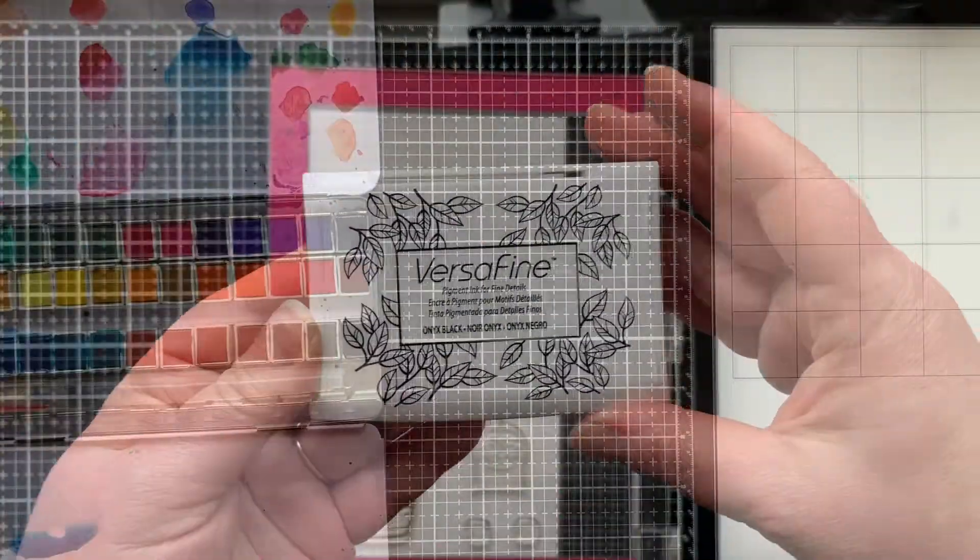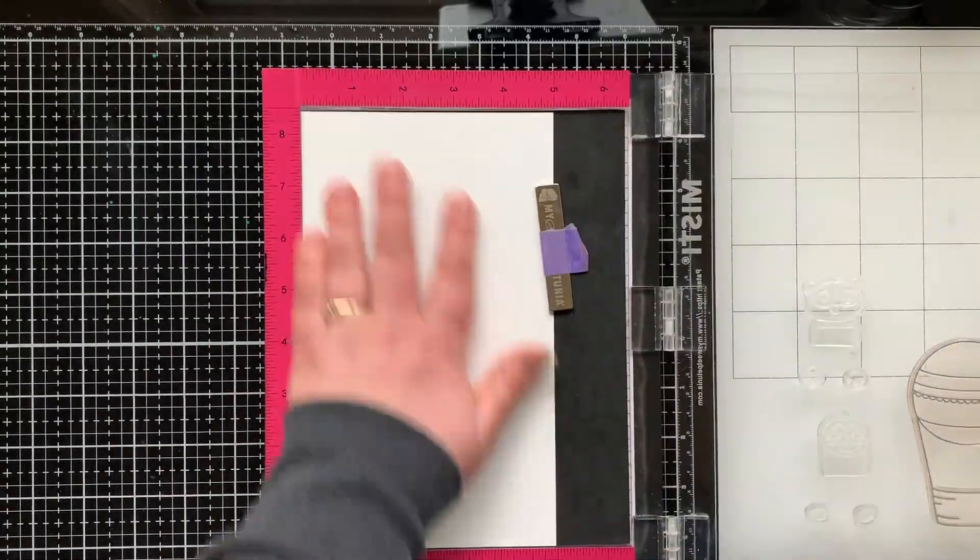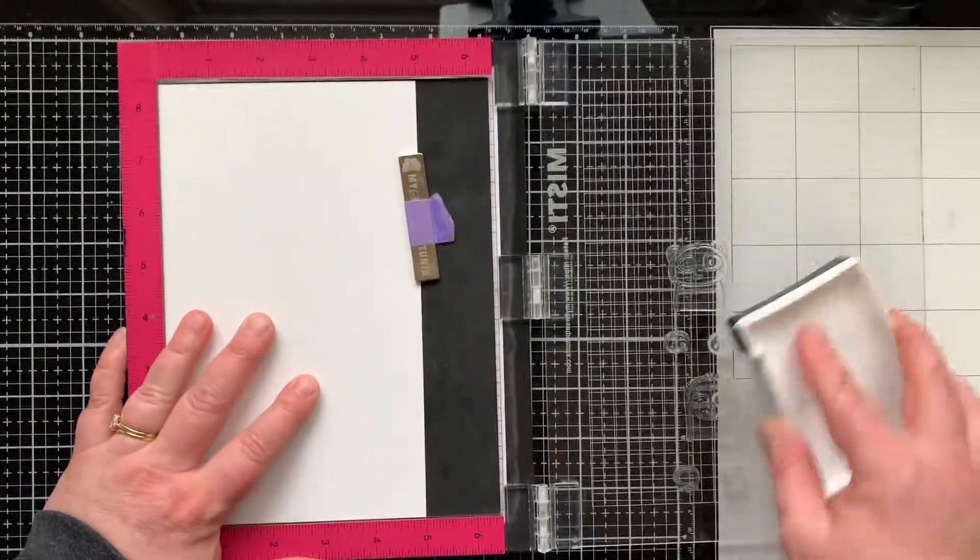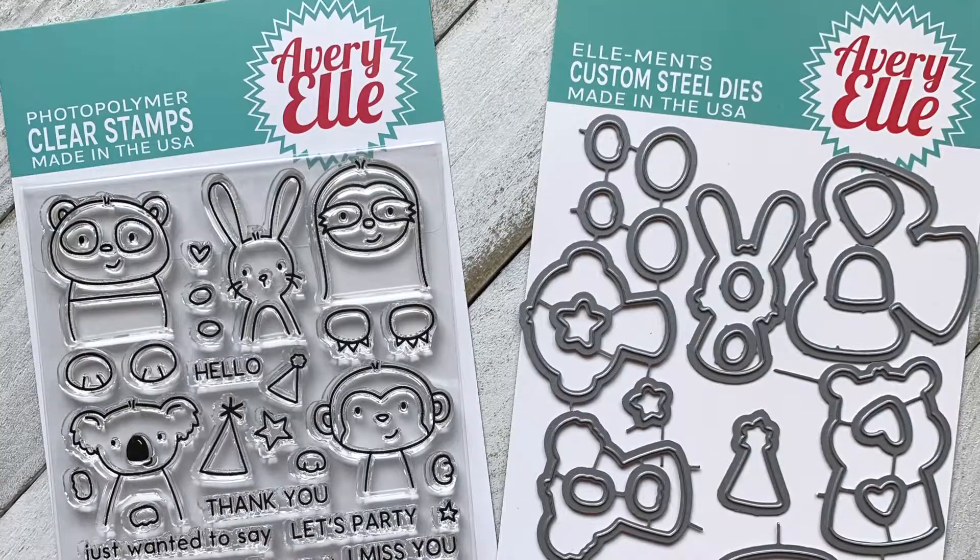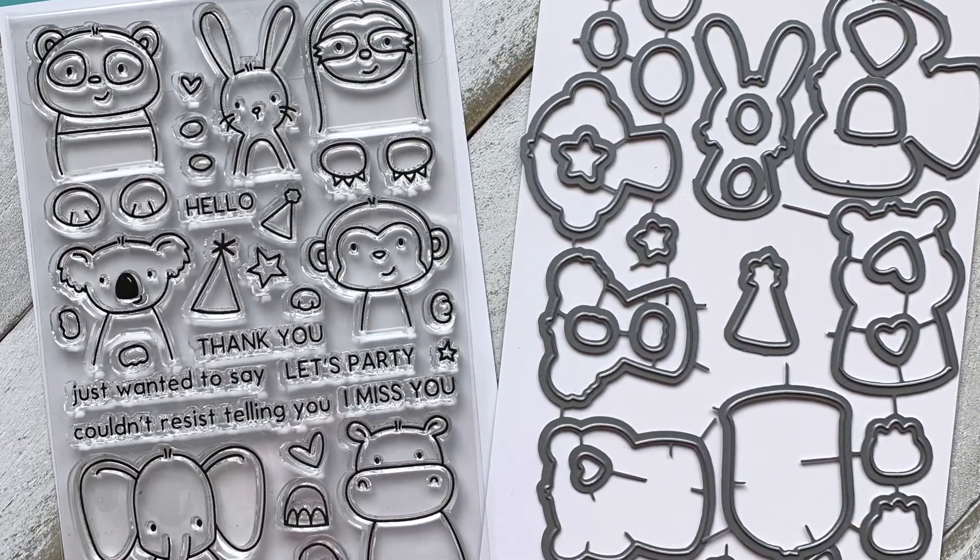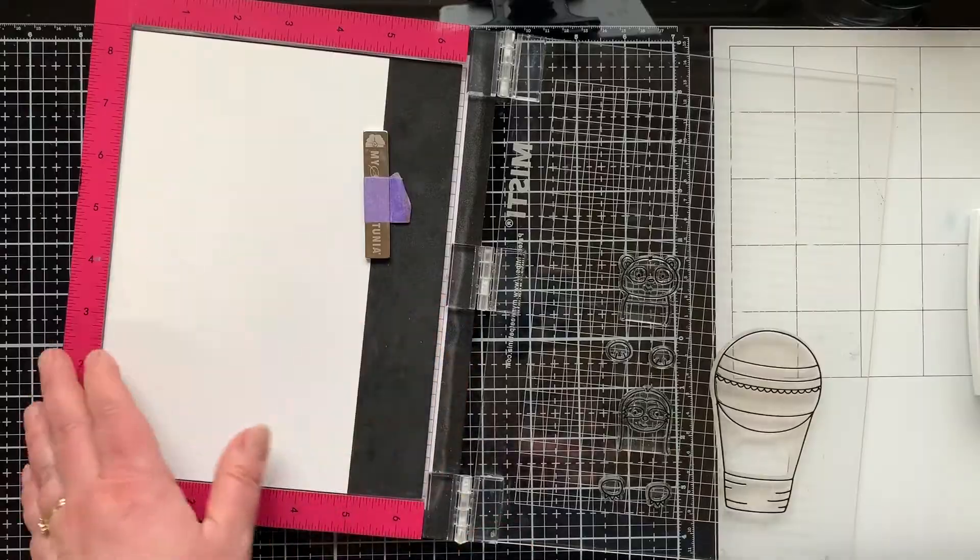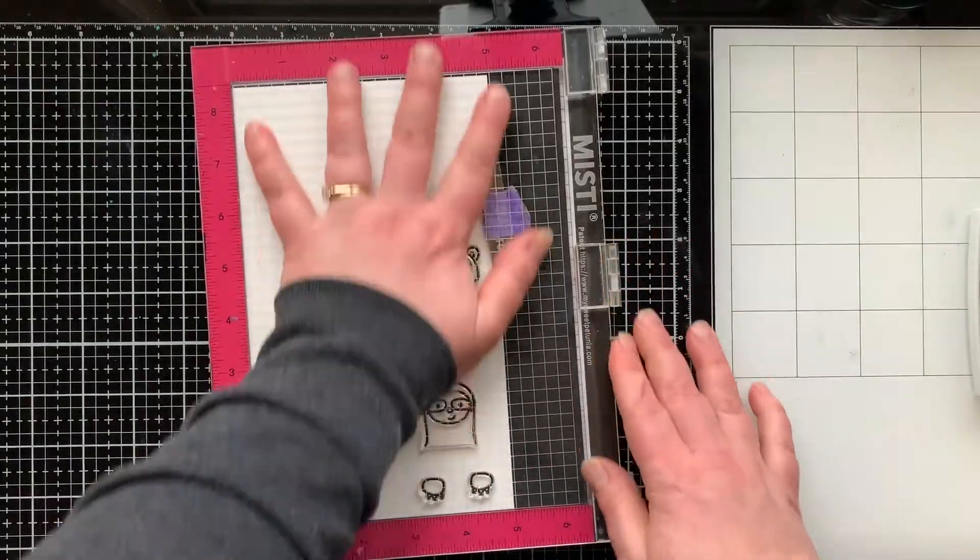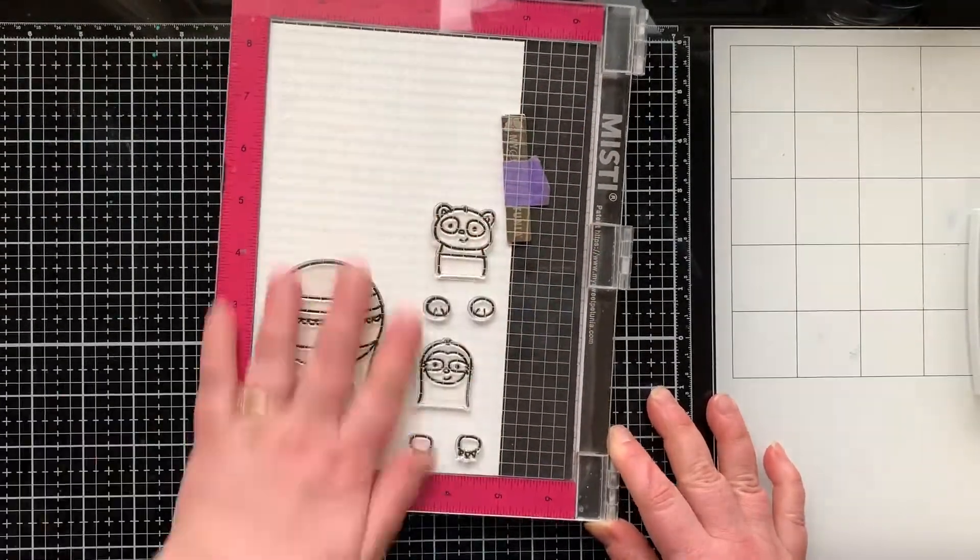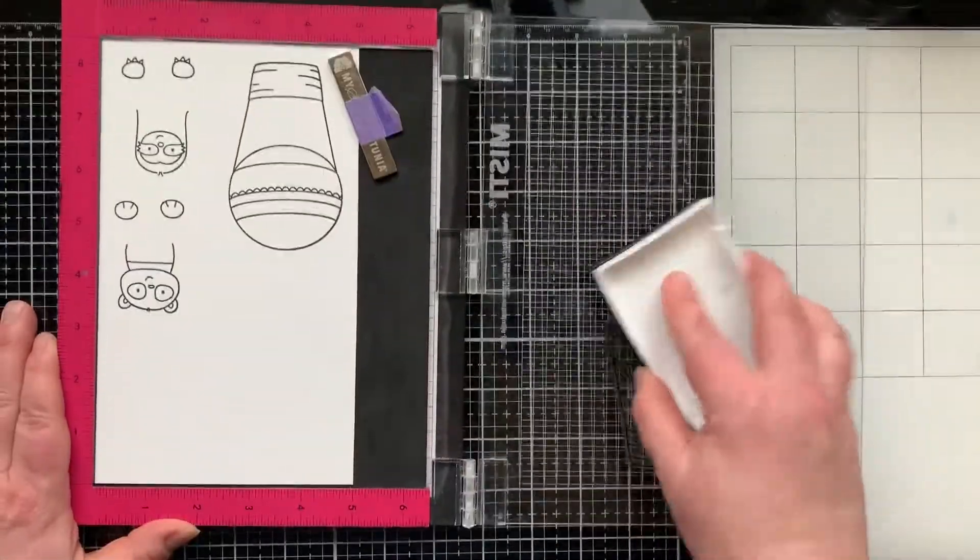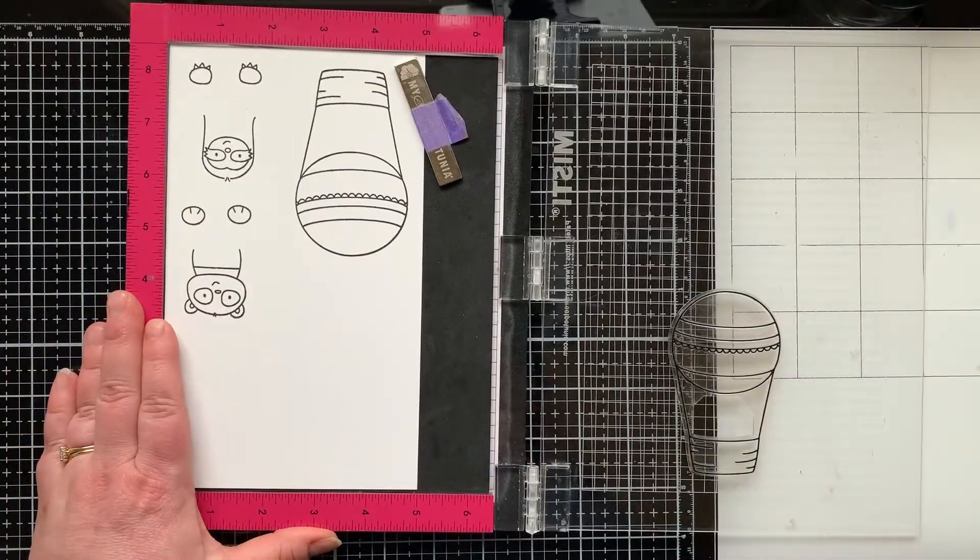I dried that and then I'm going to set that aside while I go ahead and stamp out my images with some VersaFine onyx black ink. I am adding some little critters, some peekaboo pals into the balloons. So here you can see the peekaboo pal stamp set. I'm using the sloth and the panda and look at their cute little paws, I love it.